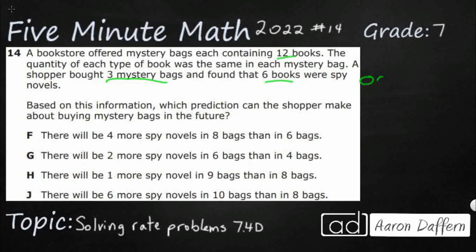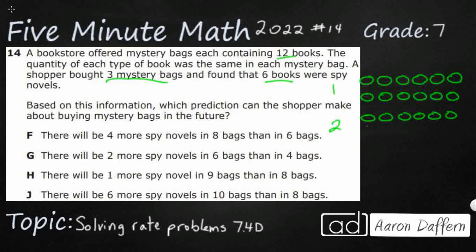So here's a mystery bag, and these circles are going to represent our 12 books. There's one mystery bag. Let's make a second mystery bag right here. This is going to help us visually because we're going to have to figure out how many spy novels are in each of these mystery bags.